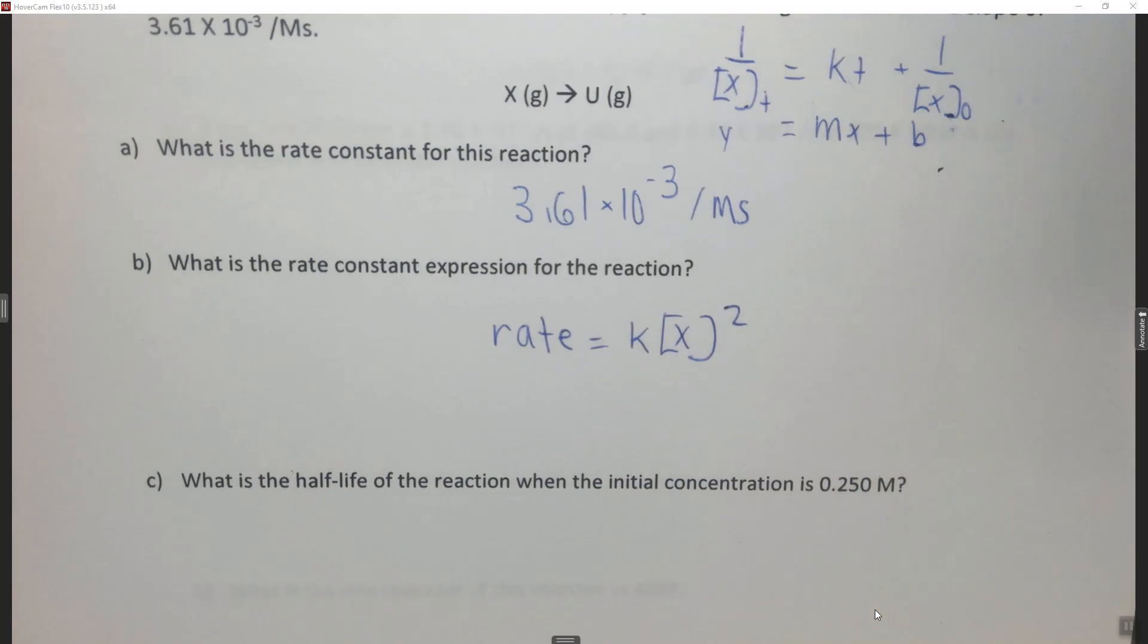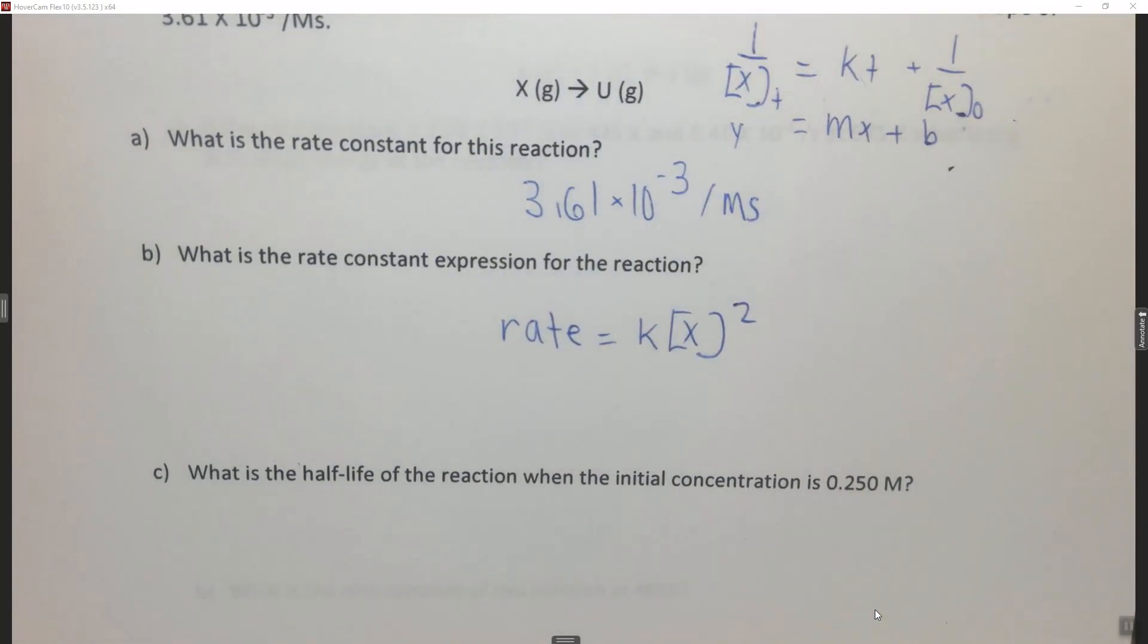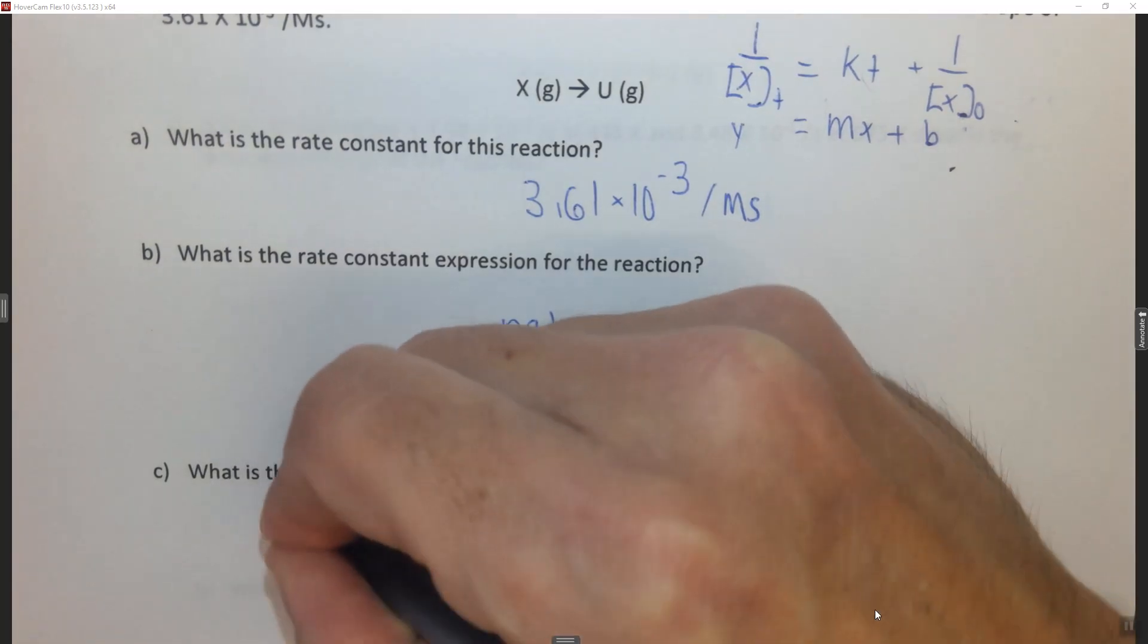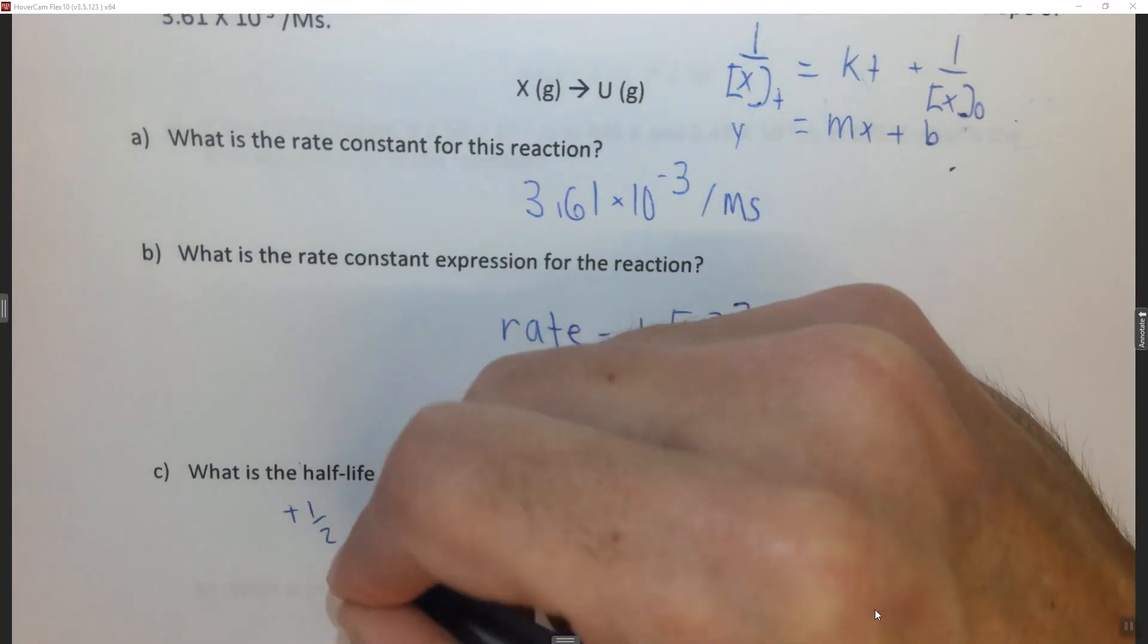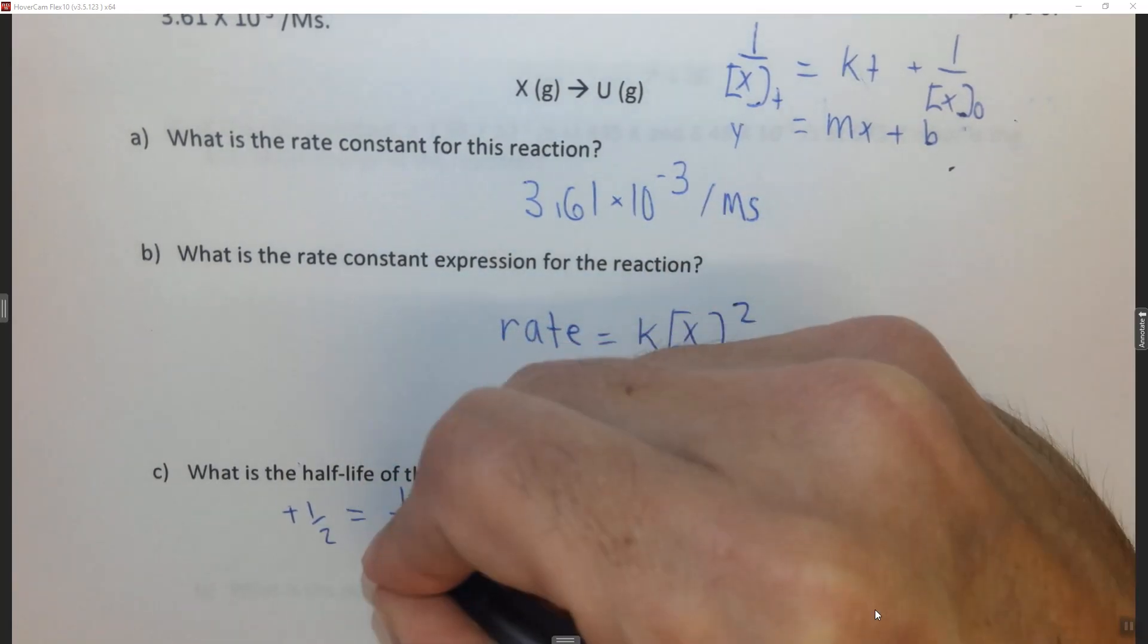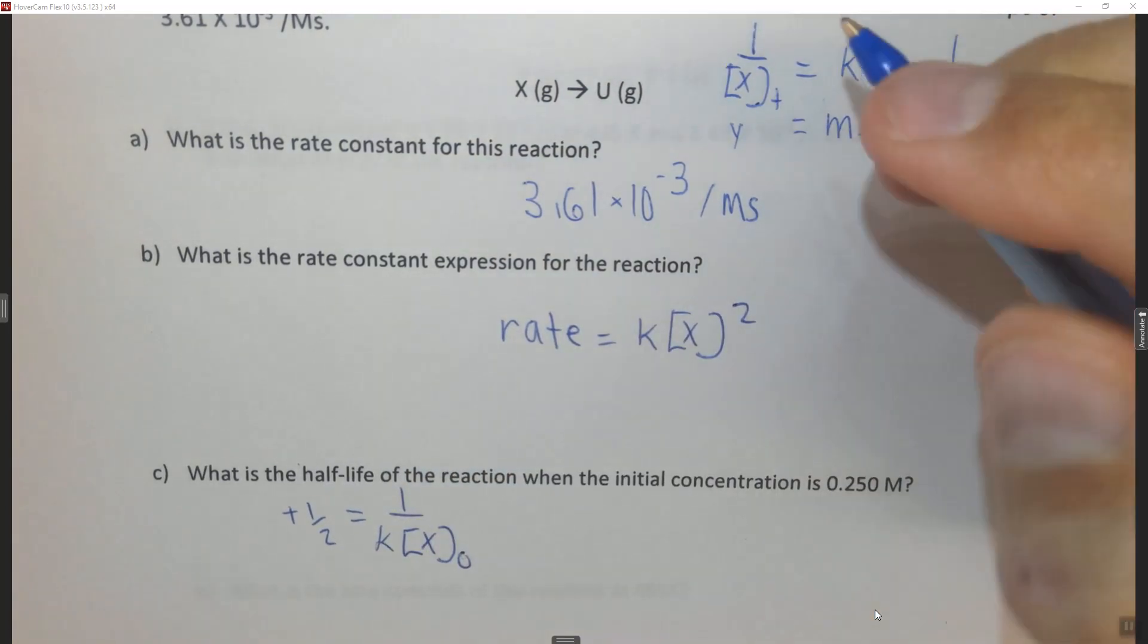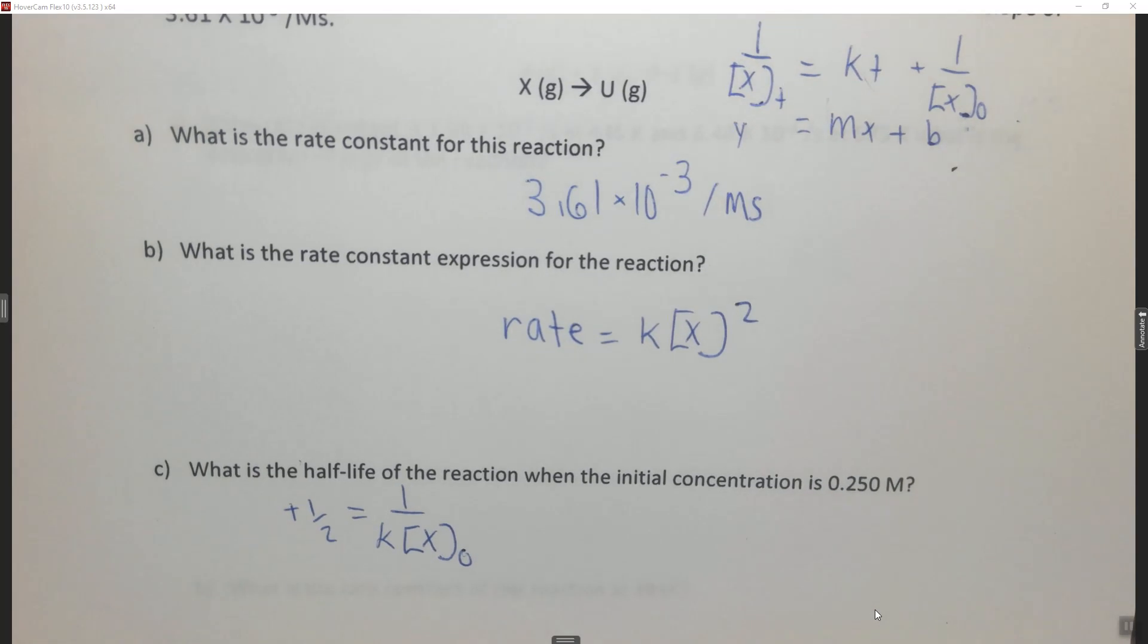It now says what is the half-life of this reaction when the initial concentration is 0.250 molar? So the t₁/₂ for second-order reactions is dependent on the initial concentration. So it's 1 over k times the concentration of X initially. So for a first-order reaction the half-life is not dependent on the initial concentration, but for a second-order reaction it is.